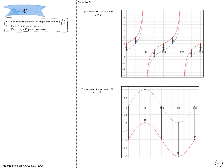The parameter c causes a vertical shift — upwards if c is positive, downwards if c is negative.